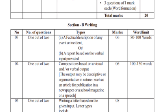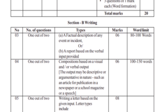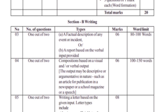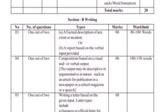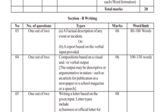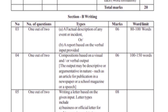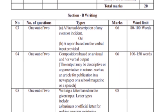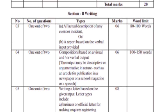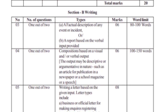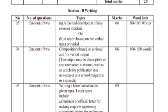The output may be descriptive or argumentative in nature, such as an article or publication in a newspaper, school magazine, or a speech. The writing skill can be descriptive. If you want to write it, there is 1 out of 2 options.